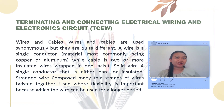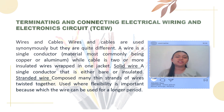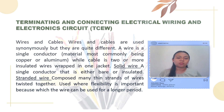In learning electronics, it is also important to know other terminologies like wires and cables. Wires and cables are used synonymously, but they are quite different. A wire is a single conductor, commonly copper or aluminum, while a cable is two or more insulated wires wrapped in one jacket. There are two types of wire: a solid wire, which is a single conductor either bare or insulated, and a stranded wire, composed of many thin strands twisted together, used where flexibility is important.